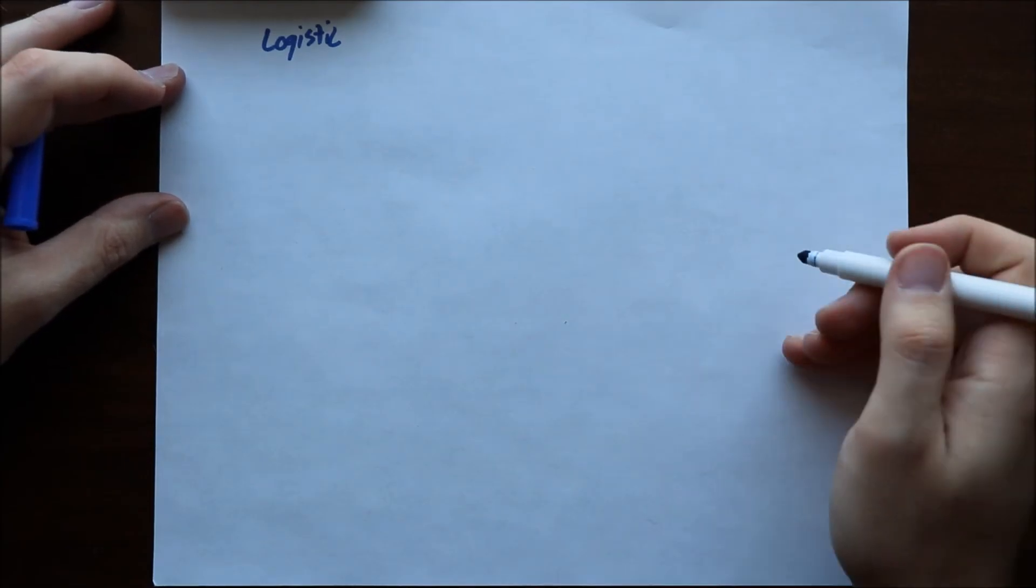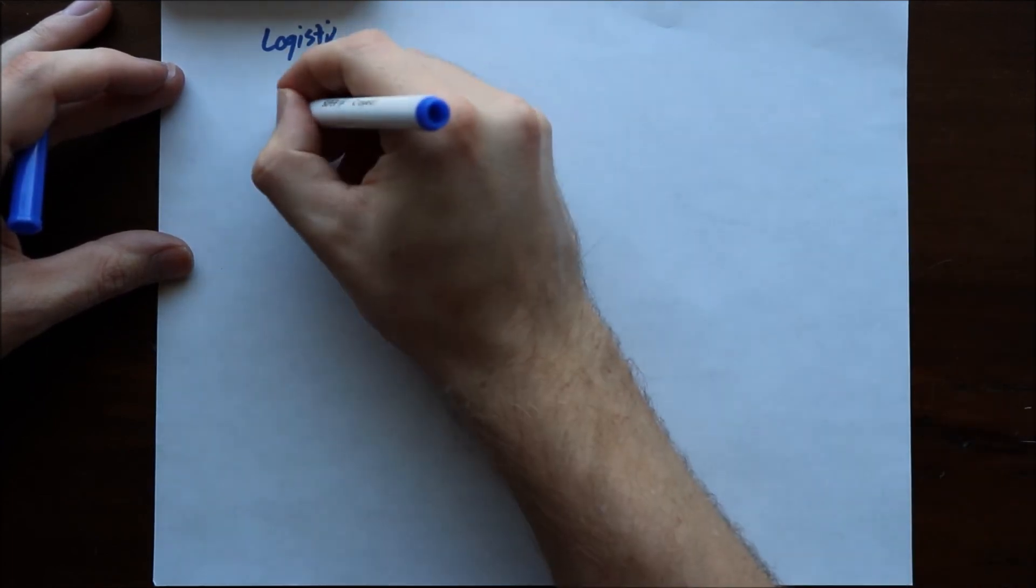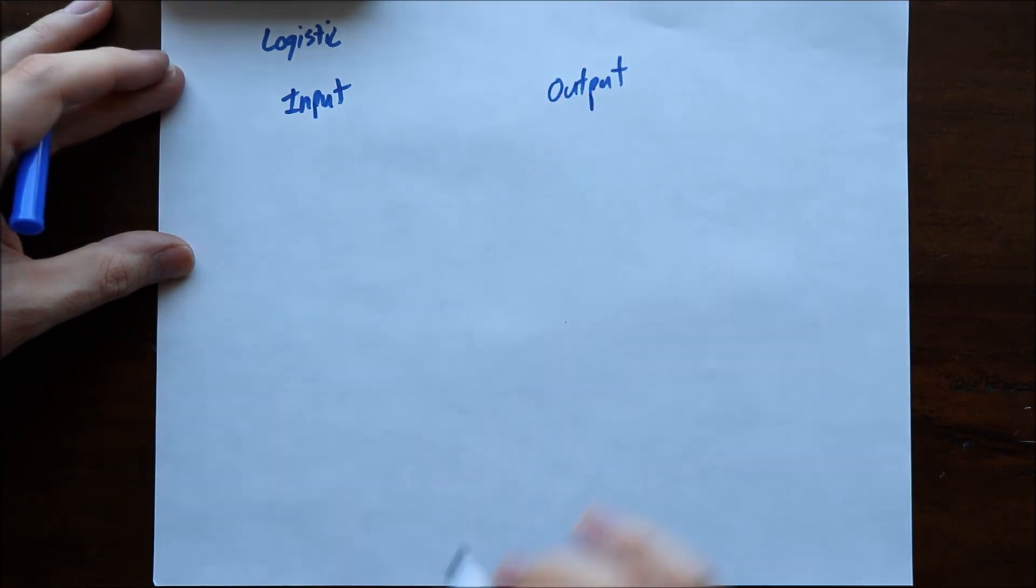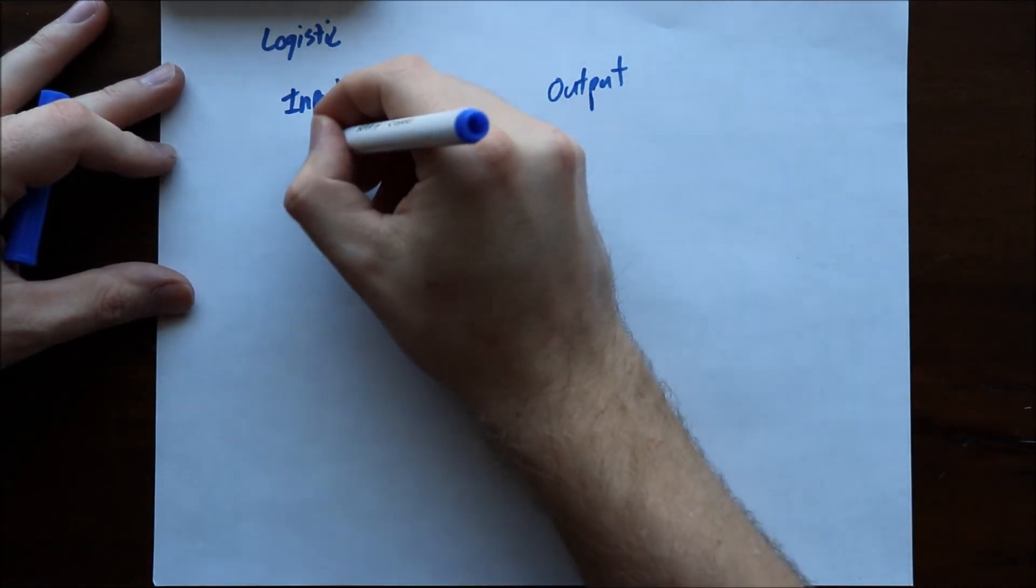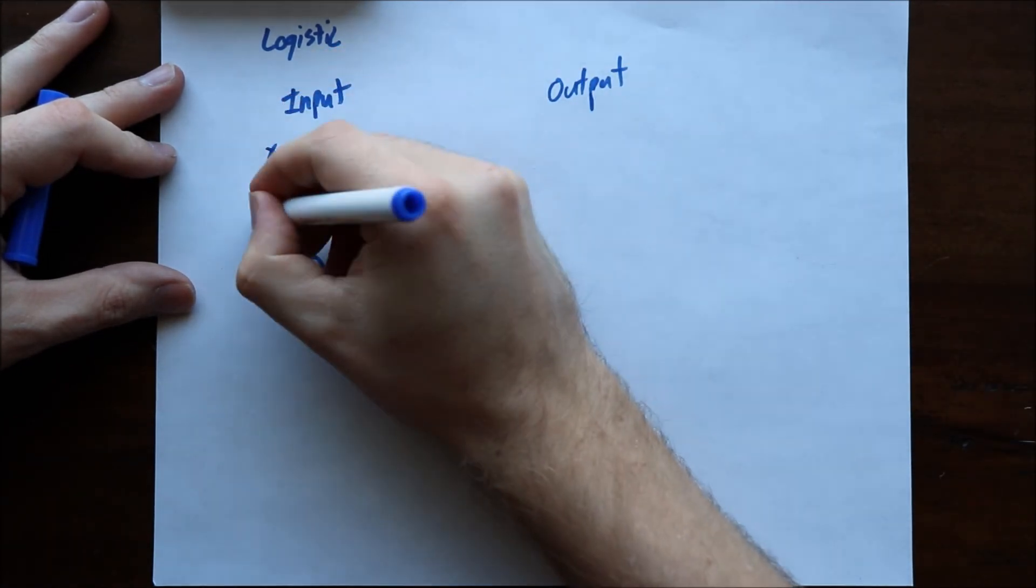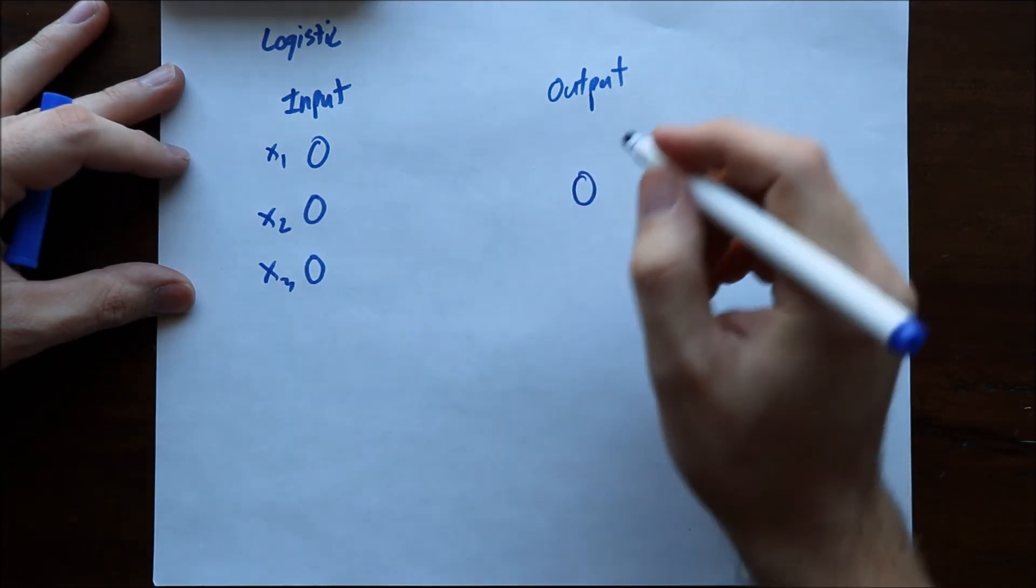A neural network is a non-linear model and it's just a way to take inputs and generate some output. The simplest form is just a logistic model. When you have a neural network you have an input layer and an output layer. Let's say three inputs, we'll call this x1, x2, and x3, and then you'll have some output on this side.